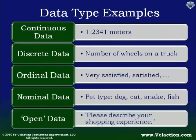An open answer example would be: please describe your shopping experience. I could ask that question on a questionnaire as people purchase things off my website and get open data like that. The benefit of open data is you don't limit the possible answers a person gives you, but you do have a lot more time that you're going to have to commit to really going through that data and figuring out what people mean.